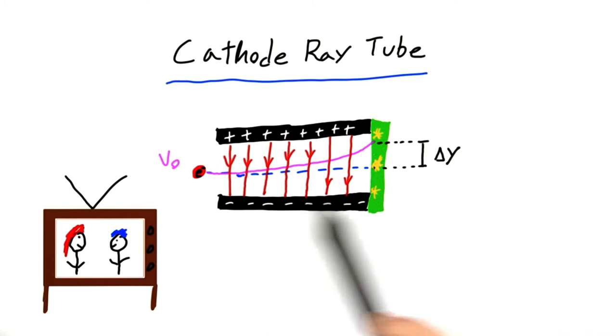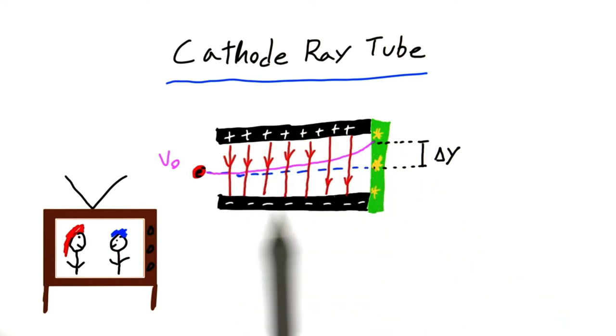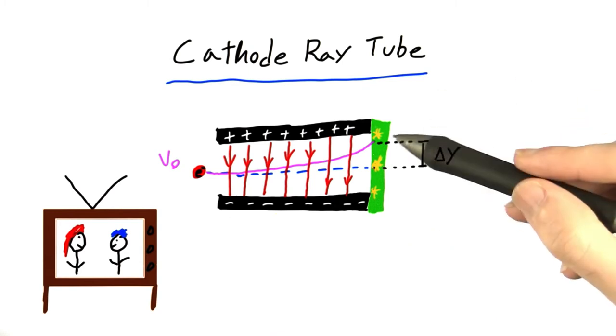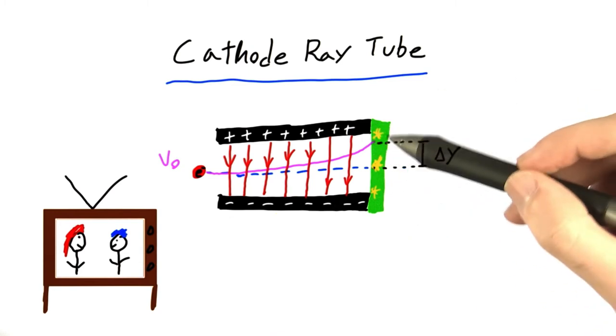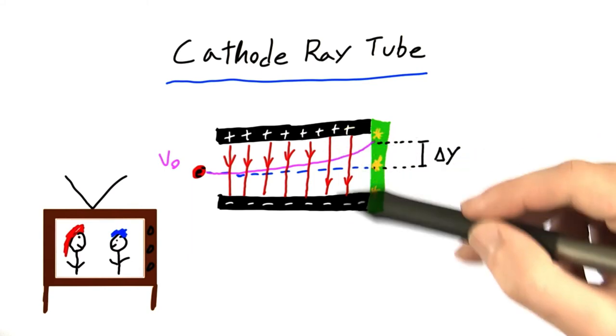And you can imagine if we wanted the electron to go down here, we'd just switch the charges so the negative charges were up here, and the positive charges were down here. So this means we can control what part of the screen the electron hits, and therefore lights up, just by changing the strength and direction of this electric field here.